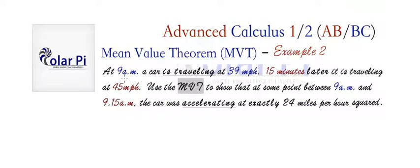You can hopefully read, so read it. Basically, a car's traveling, meaning velocity, is this at 9, and then at 9:15, the velocity is this. And what we have to do is use the mean value theorem to show that between 9 and 9:15, the car was accelerating, meaning the derivative of velocity was 24 miles per hour squared.